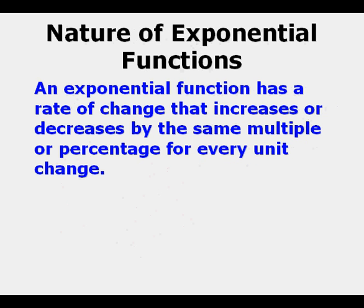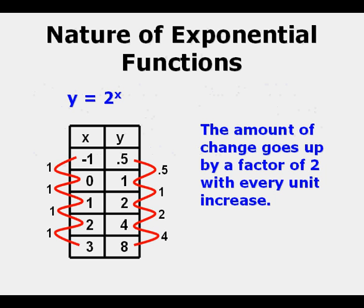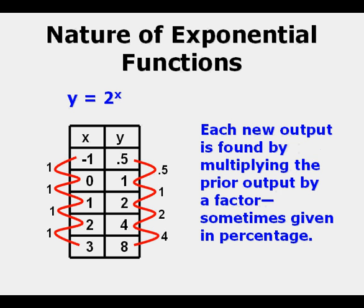An exponential function has a rate of change that increases or decreases by the same multiple or percentage for every unit increase. The amount of change goes up by a factor of 2 in this table with every unit increase. Each new output is found by multiplying the prior output by a factor, sometimes given in percentage. 0.5 times 2 is 1, 1 times 2 is 2, 2 times 2 is 4, 4 times 2 is 8, and so on.